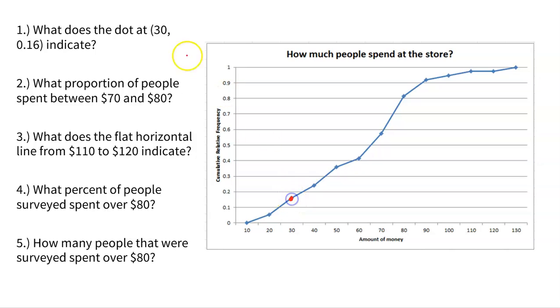What does this specific dot mean? Remember, the x is the amount of money and the y is the percentile. So 16% of people spent $30 or less.